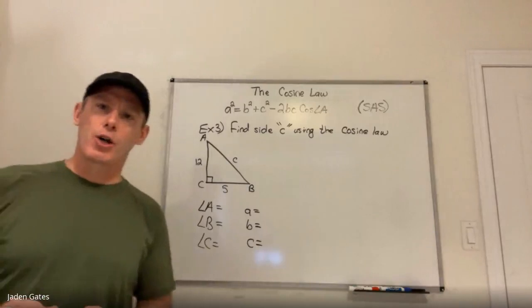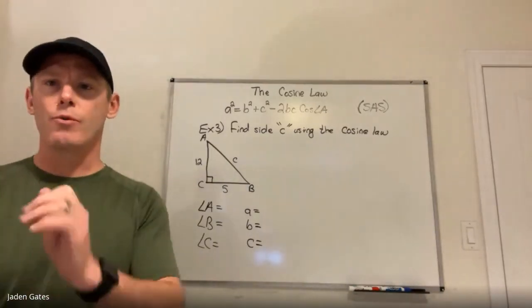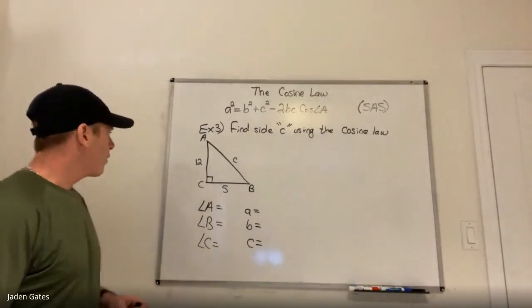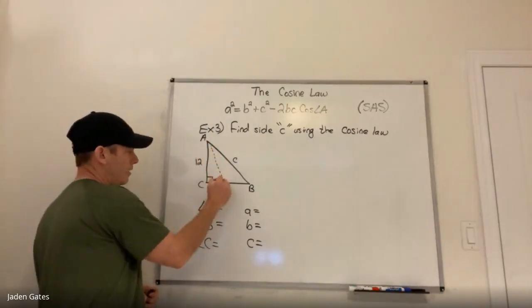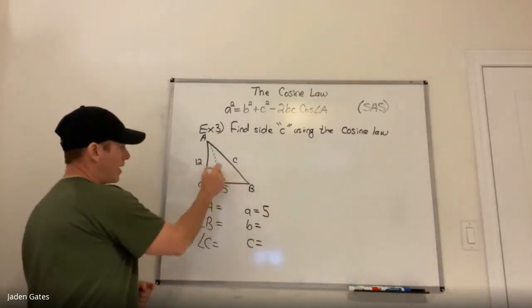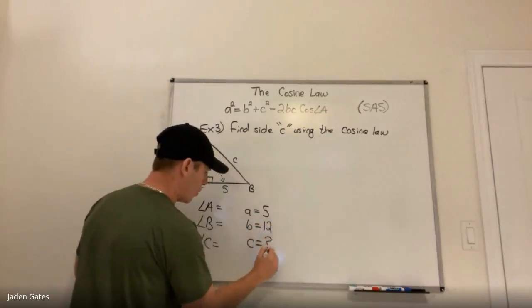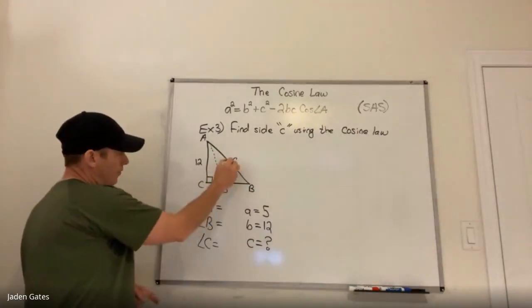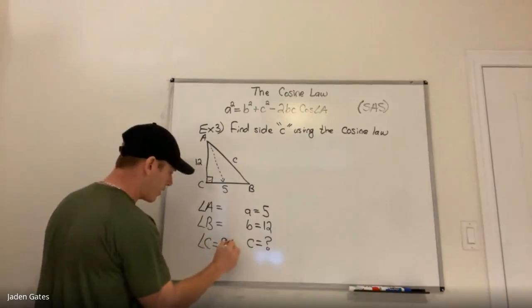The thing with the sine law and the cosine law is they are used for non-right-angle triangles, but they can also be used for right-angle triangles. Side A is 5 — it's across from angle A. Side B is 12, across from angle B. I don't know side C, but the angle across from side C is 90 degrees, so angle C is 90 degrees.